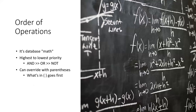Just like math problems, there is an order of operations when searching. Instead of numbers, databases use your keywords and operators. First, it will look for things connected with AND, then OR, and finally it will exclude anything connected by NOT. Just like in math, you can force it to look at certain things first by putting them in parentheses — anything in parentheses will be searched before everything else is connected together.